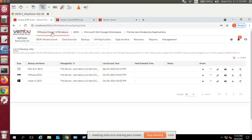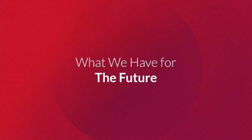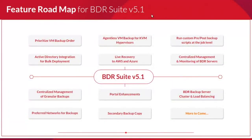This concludes the overview of Rainbow BDR Suite version 5.0. Looking ahead to version 5.1, which will be released after the version 5.0 GA in a couple of days: one important feature is prioritized VM backup order, where you can prioritize which VMs are backed up first within a backup job, assigning order numbers one, two, three, and four to critical VMs.